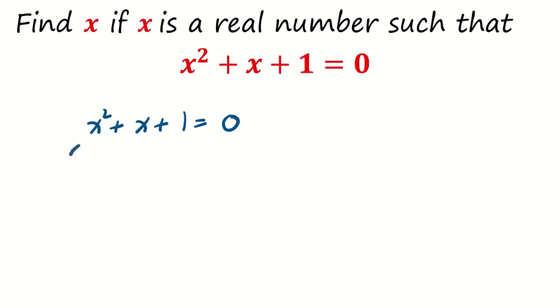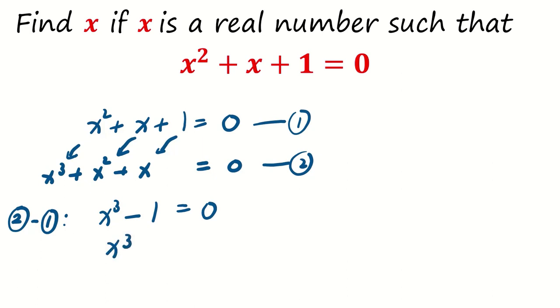If we multiply each term by x, we obtain x^3 + x^2 + x = 0. The difference between these two equations gives x^3 - 1 = 0. Solving this, we find a real root of 1.